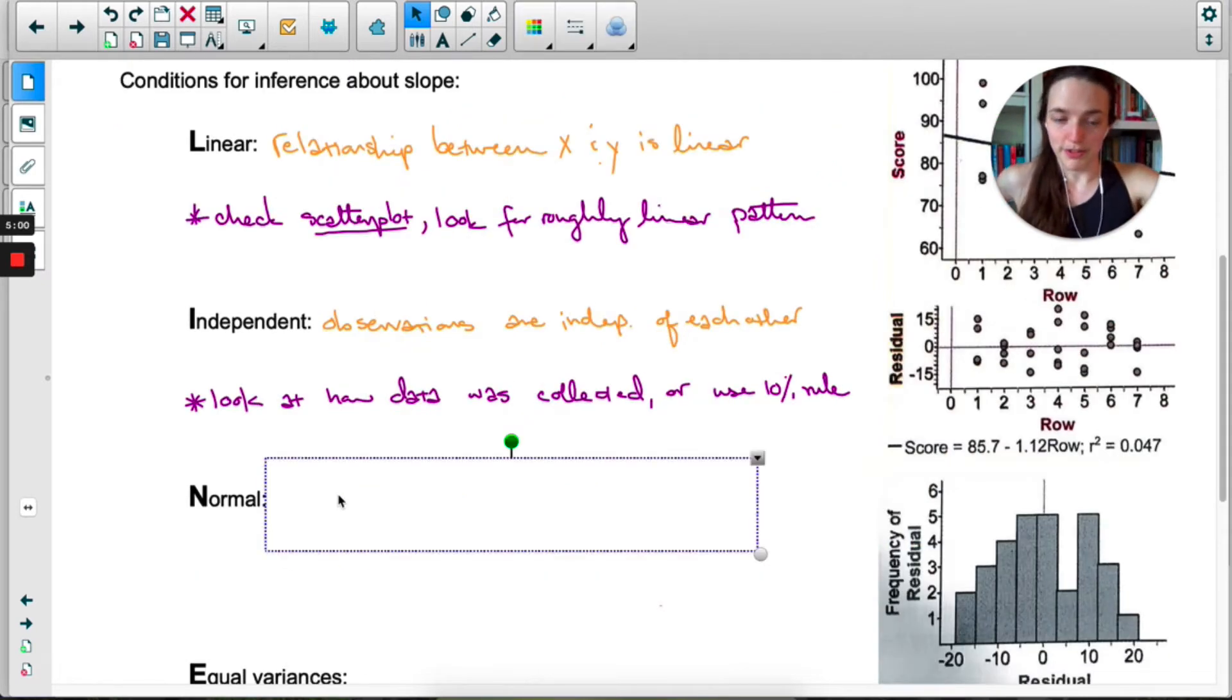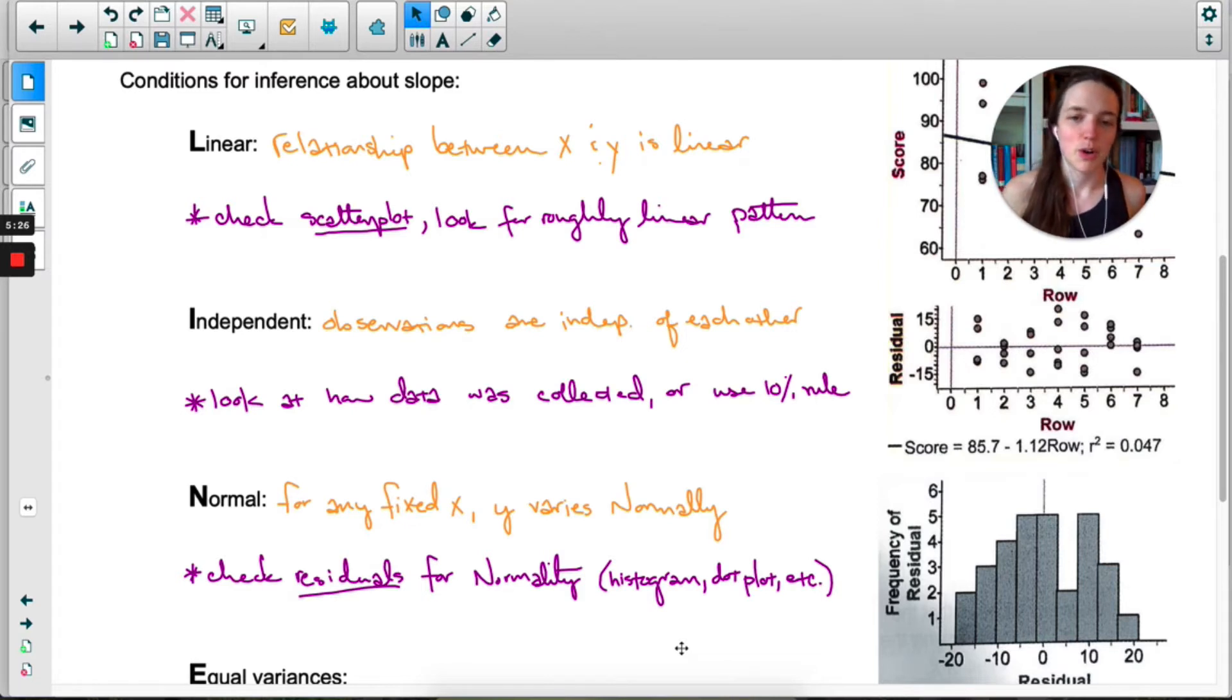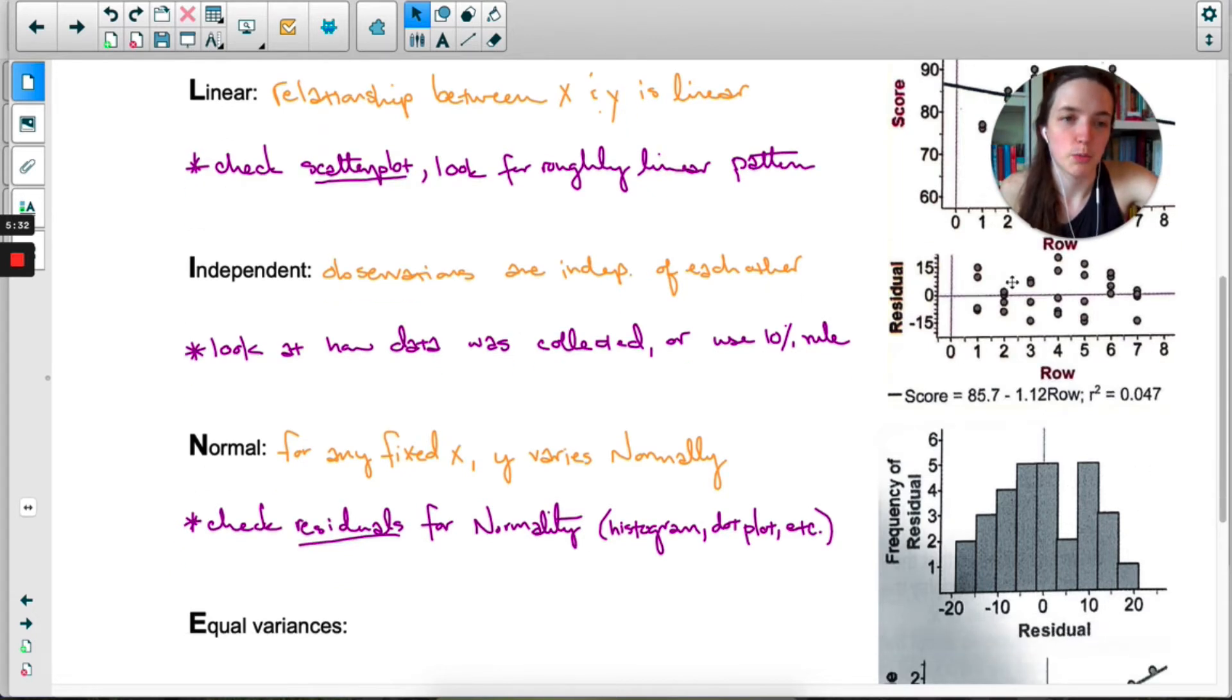The next condition is normal. For any fixed x, y has to vary normally. Pick any x value, any row of the seven rows—y has to vary normally for that particular x value. For this one, check the residuals. If we look at the residuals and see that they are roughly normal, then we know y is varying normally. You can see on the right here are the residuals in a histogram. You want to look for a histogram, dot plot, box plot, or stem and leaf plot. Here, yeah, they're mostly normal.